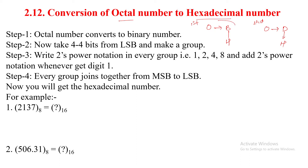I am going to demonstrate the first method because it is the easiest method — octal to binary and binary to hexadecimal. Both methods require two conversions: the first conversion is octal to binary, then the second conversion is binary to hexadecimal. In the second method it is also two conversions: octal to decimal, then decimal to hexadecimal.